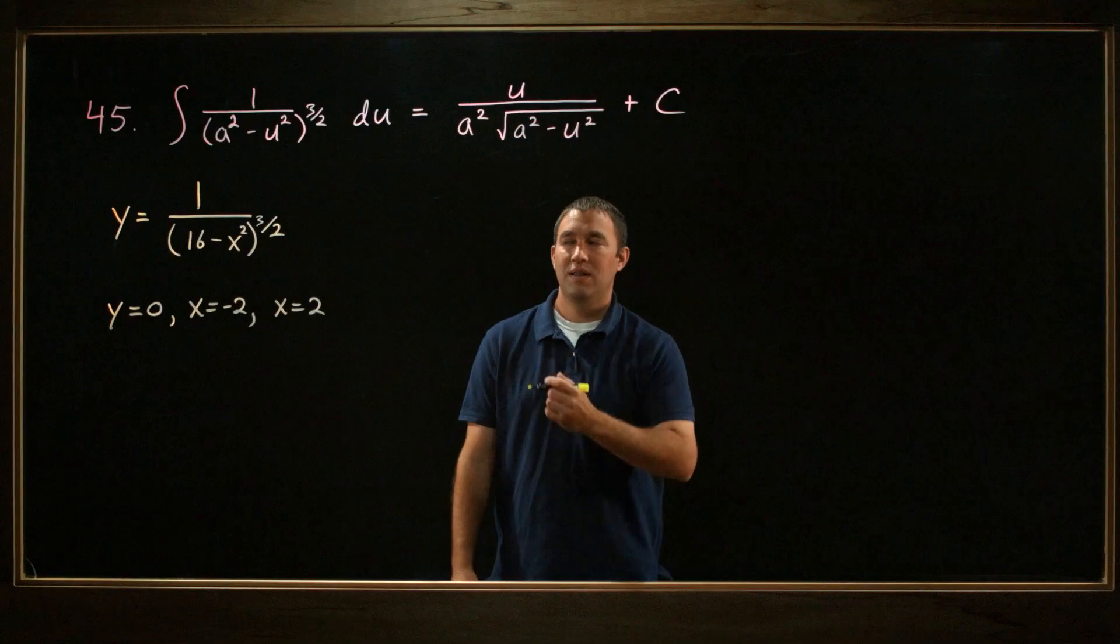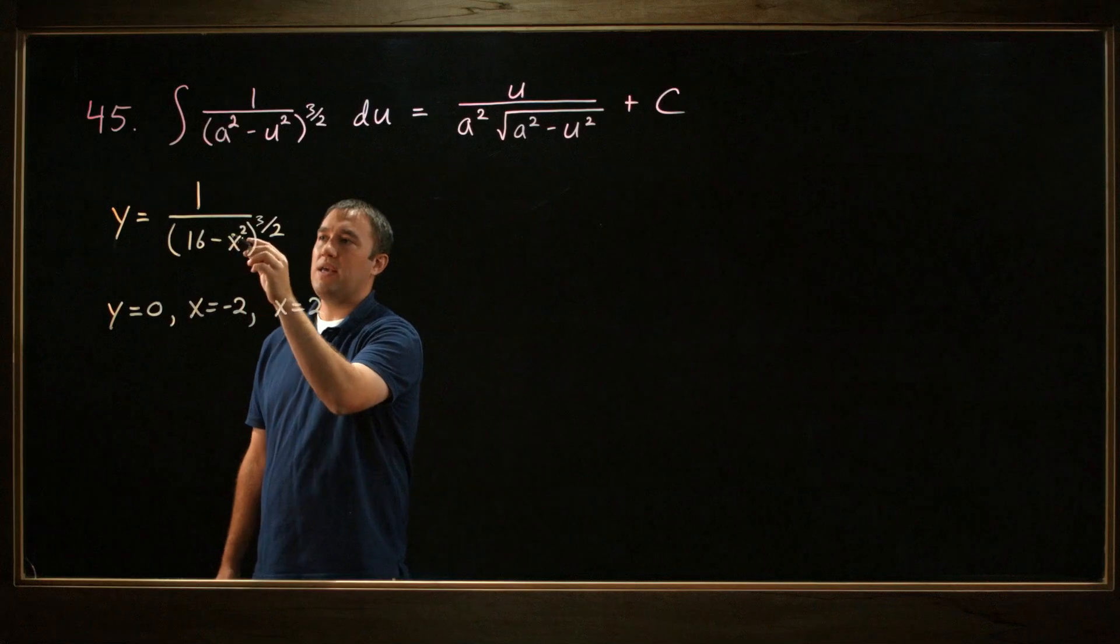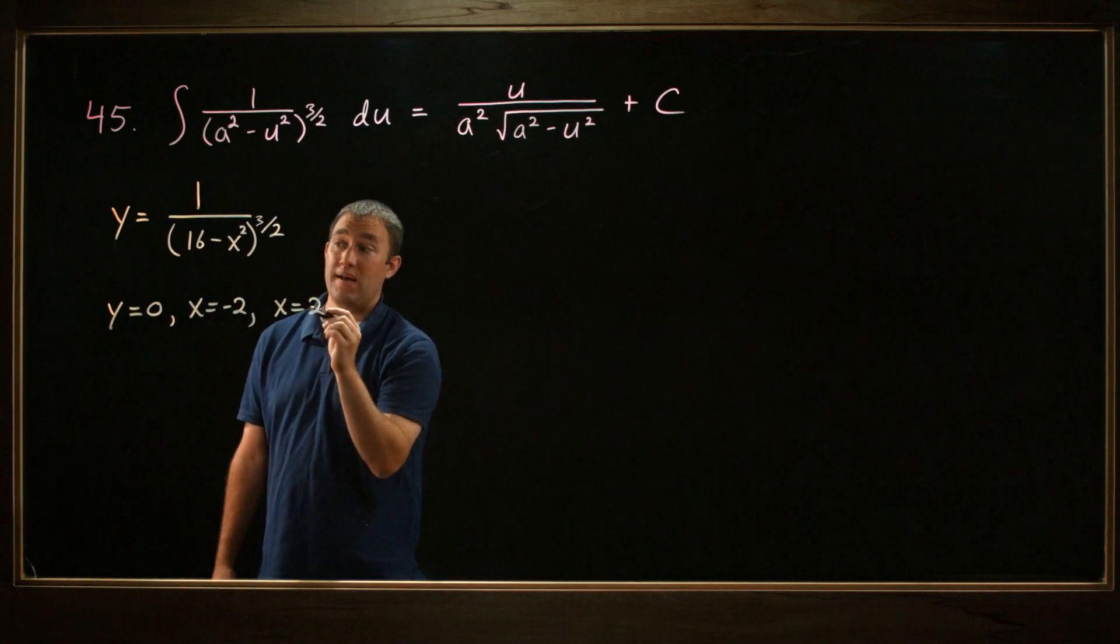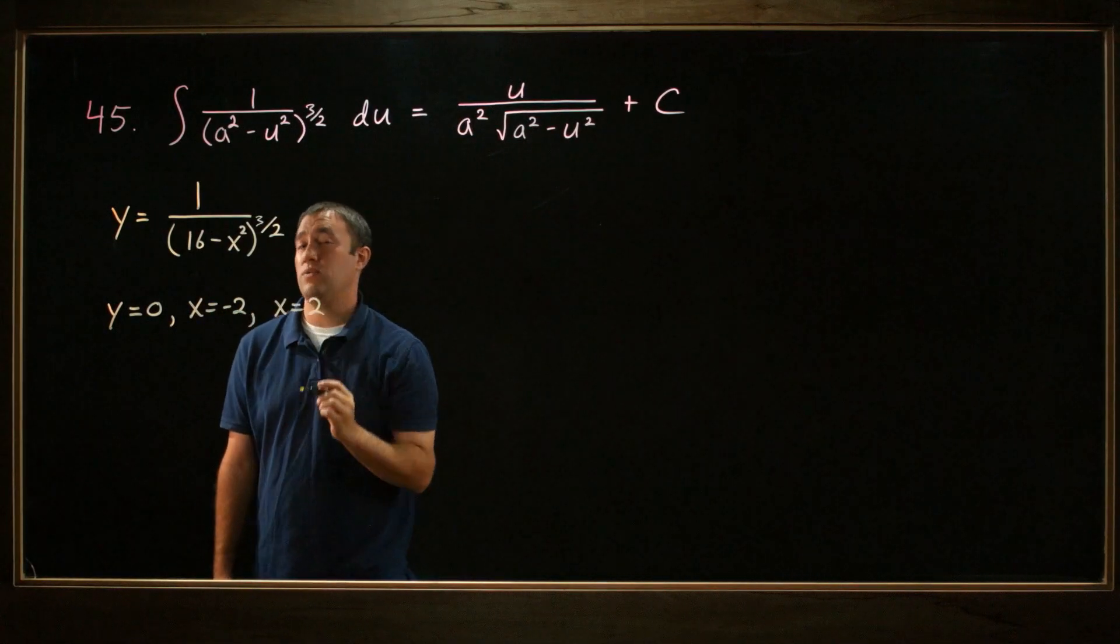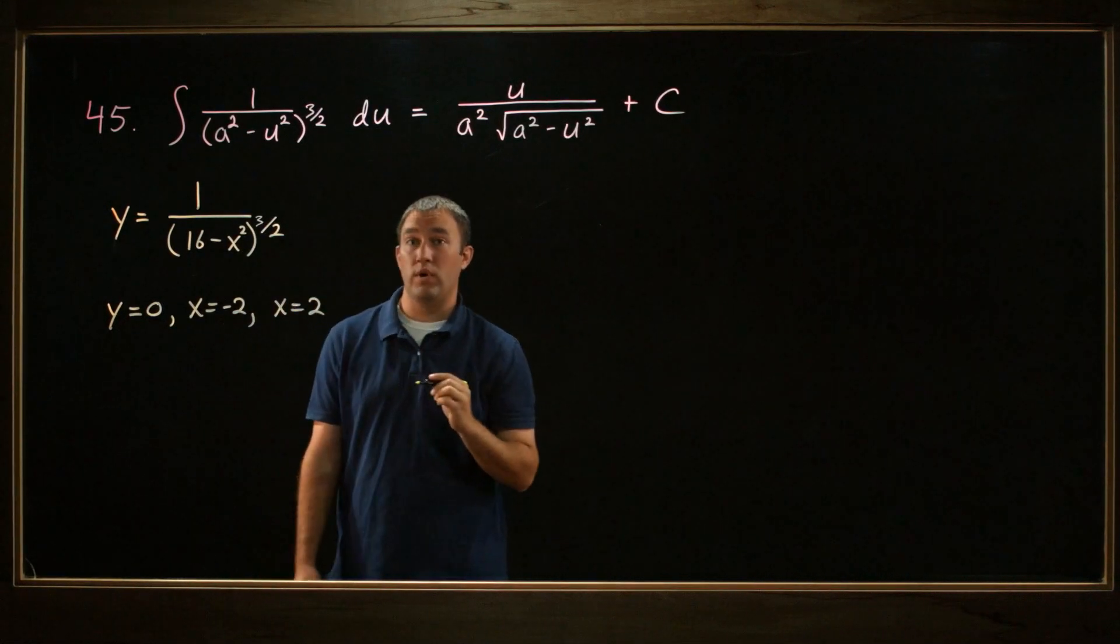Hi, I'm David. Let's look at this problem. We're given four equations: y equals 1 over 16 minus x squared, all raised to the 3 halves, y equals 0, x equals negative 2, and x equals 2. And we're asked to find the area bounded by the graphs of these four equations.